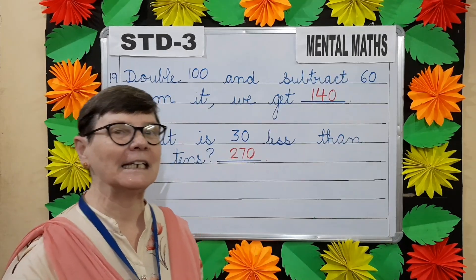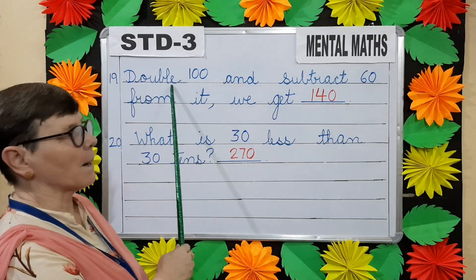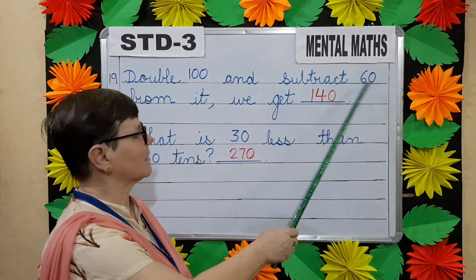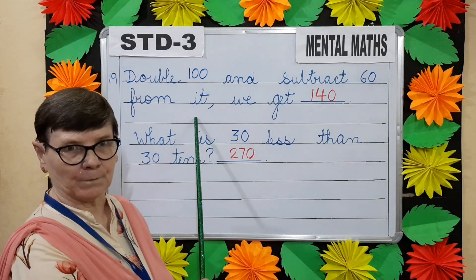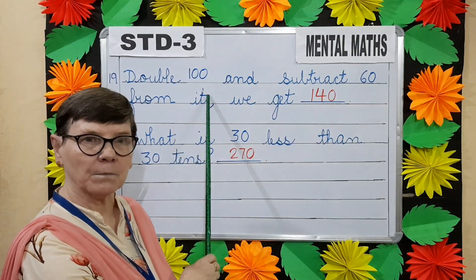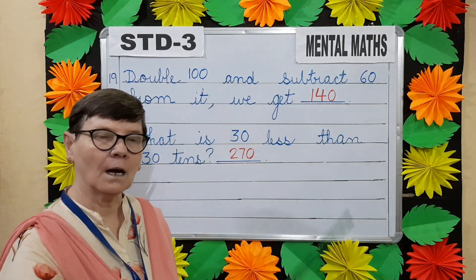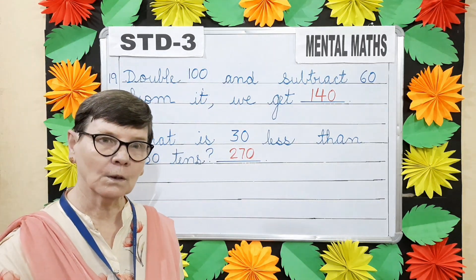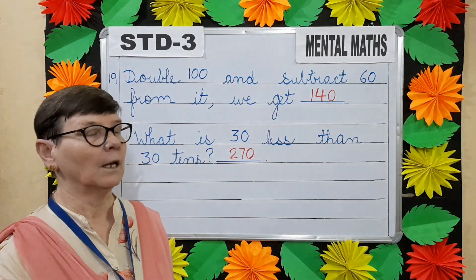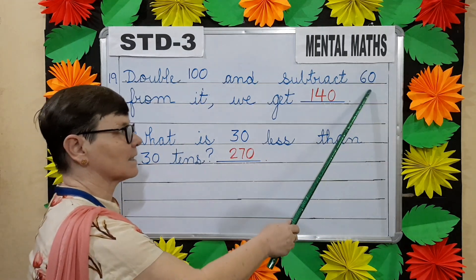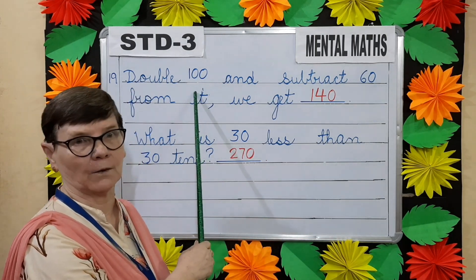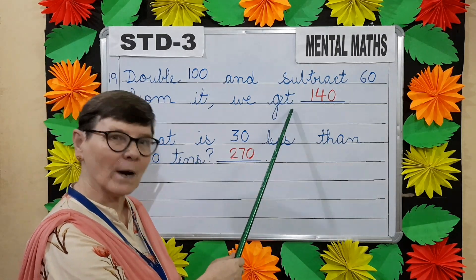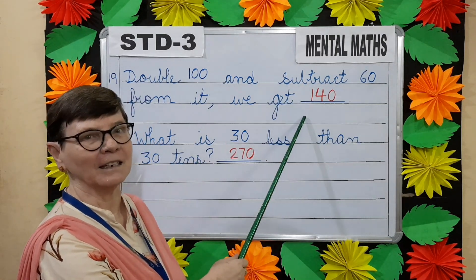Question number nineteen. Double hundred and subtract sixty from it. Double hundred means hundred plus hundred will give you two hundred. Now subtract sixty from two hundred — what will you get? One hundred and forty.